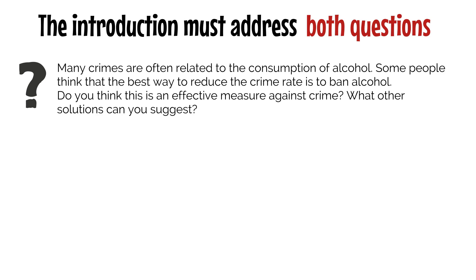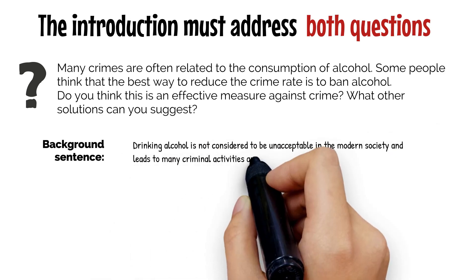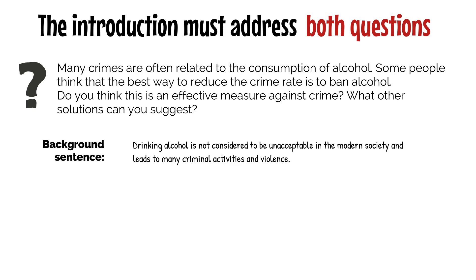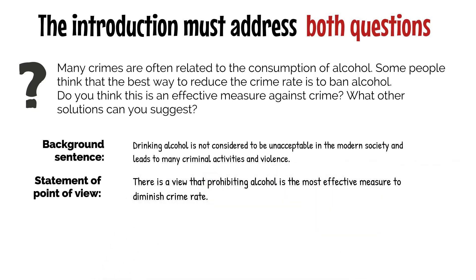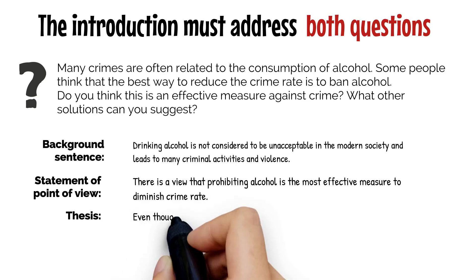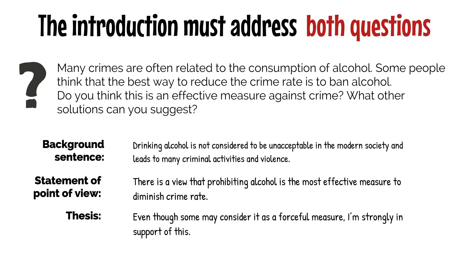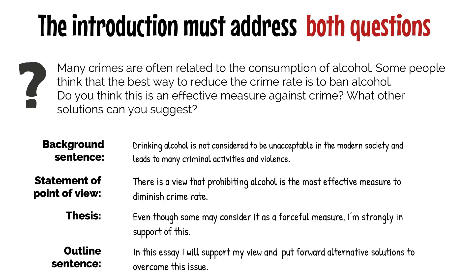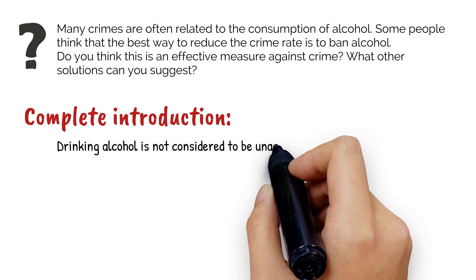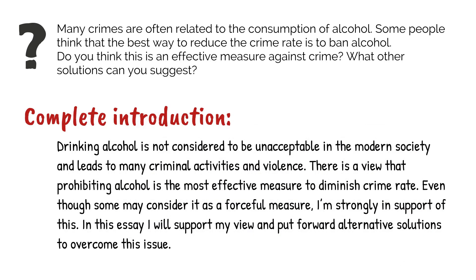The introduction for that essay question could be structured as follows. Background sentence: 'Drinking alcohol is not considered to be unacceptable in modern society and leads to many criminal activities and violence.' Statement of point of view: 'There is a view that prohibiting alcohol is the most effective measure to diminish the crime rate.' Thesis: 'Even though some may consider it a forceful measure, I am strongly in support of this.' Outline sentence: 'In this essay, I will support my view and put forward alternative solutions to overcome this issue.'